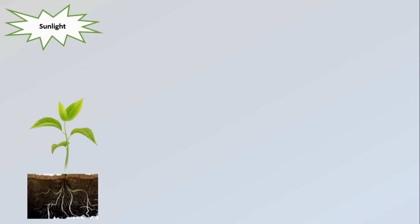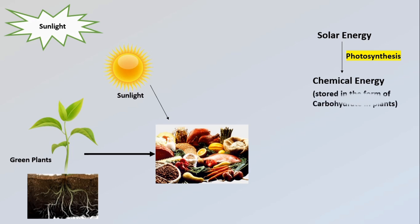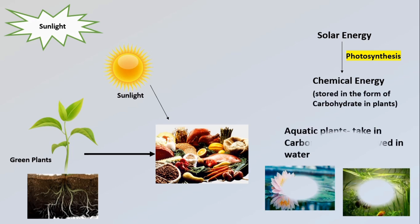The fourth requirement is sunlight. Green plants synthesize food in the presence of sunlight. Chlorophyll in the green leaves traps the solar energy. The solar energy is converted into chemical energy by photosynthesis and stored in the form of carbohydrate in plants. The leaves of plants grow in different patterns to catch the maximum amount of sunlight.